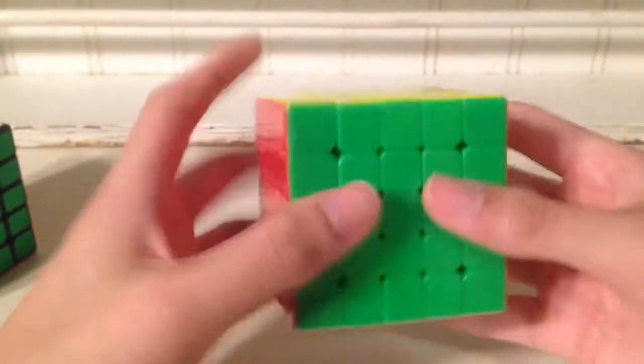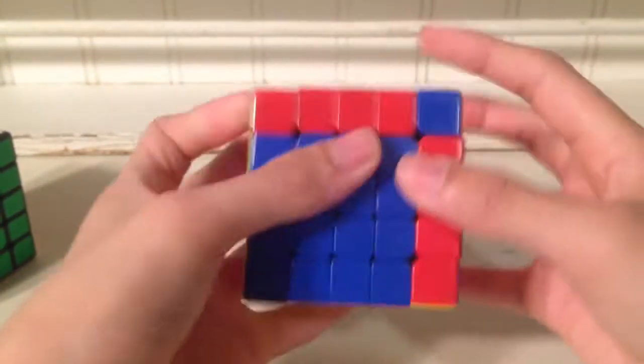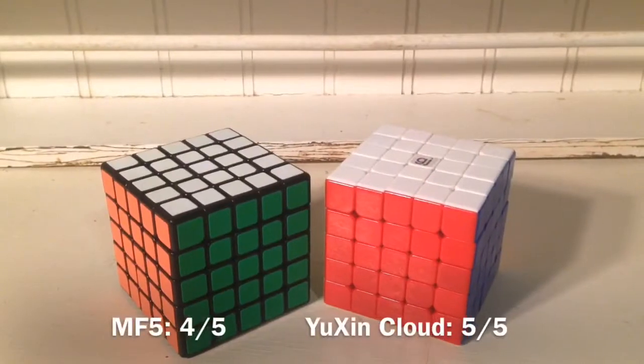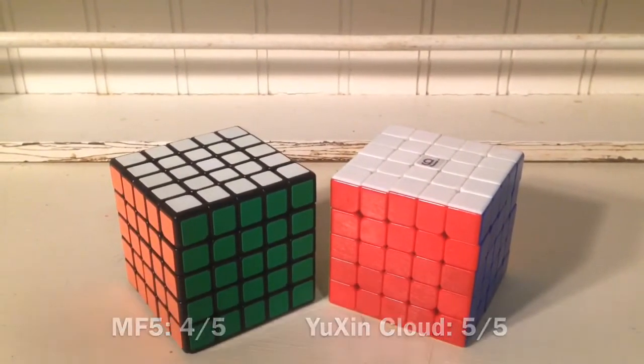On the other hand, the YuXin Cloud only comes in stickerless plastic, so it doesn't have any sticker quality at all. Its turning is pretty smooth and very buttery. For this category, I'd give the MF5 a 4 out of 5, and the YuXin Cloud a 5 out of 5.